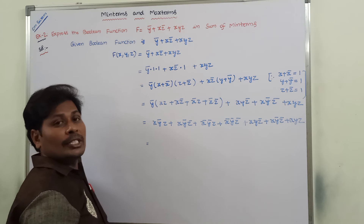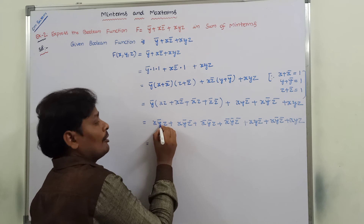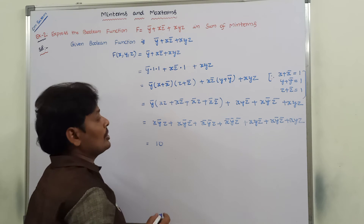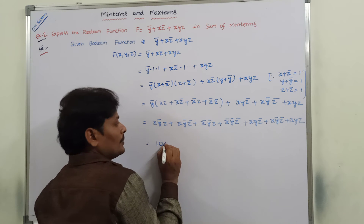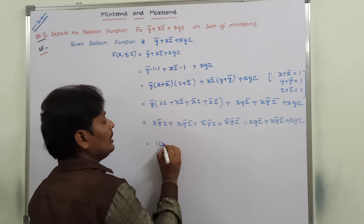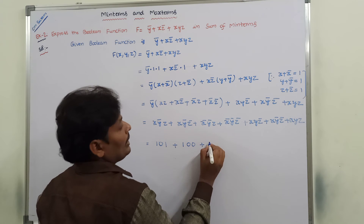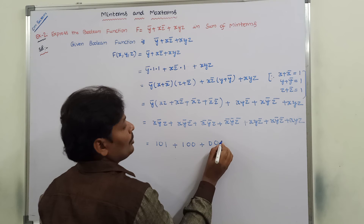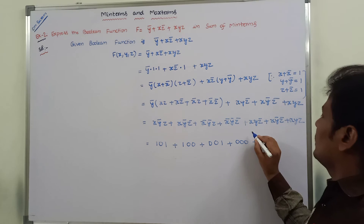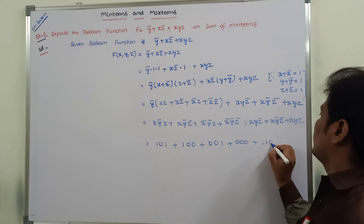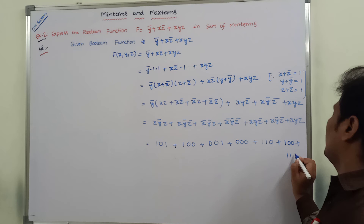Each term can be represented as a binary number. For an uncomplemented variable we write 1, and for a complemented variable we write 0. So xȳz = 101, xȳz̄ = 100, x̄ȳz = 001, x̄ȳz̄ = 000, xyz̄ = 110, xȳz̄ = 100, and xyz = 111.